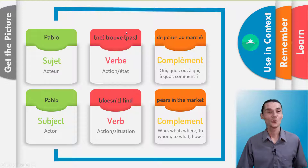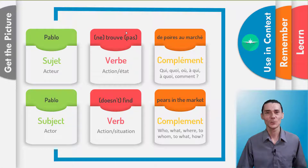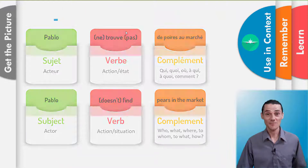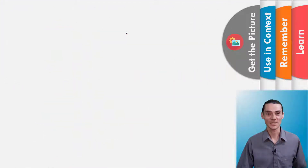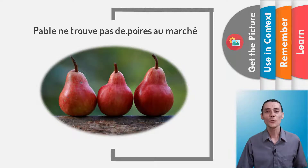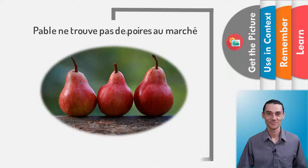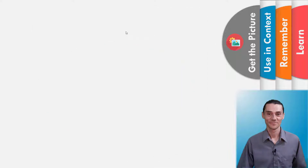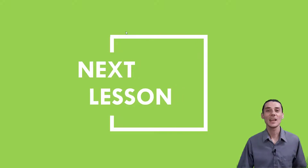And the last thing we will see now for you to remember that word is a photography. Here it is. Here are some pears. Pablo ne trouve pas de poire au marché. And now we go to the next lesson.